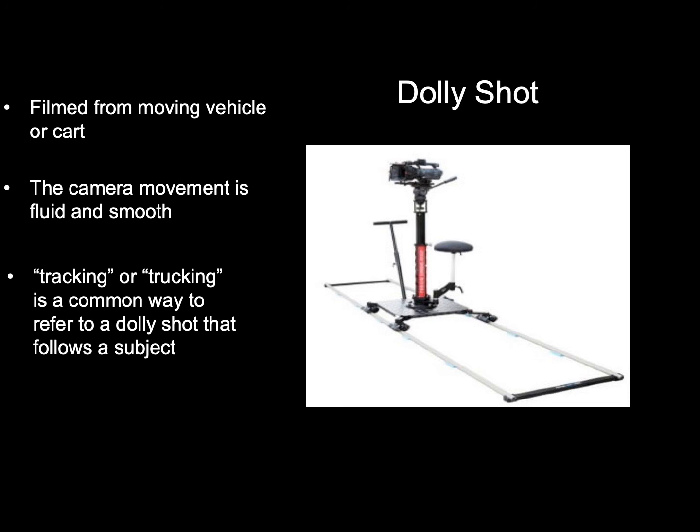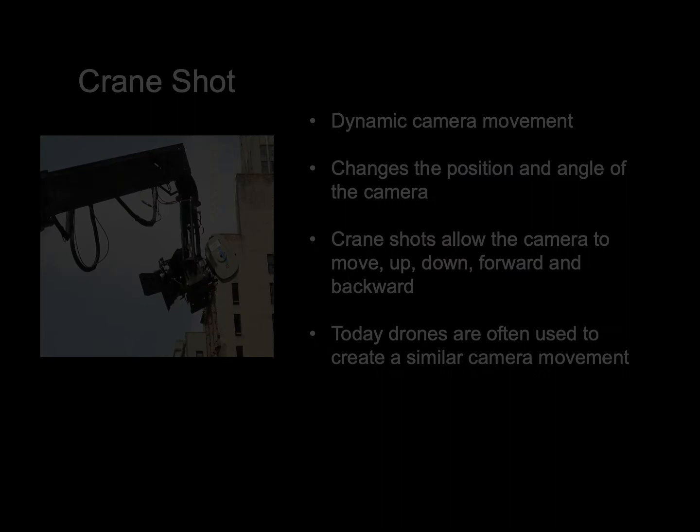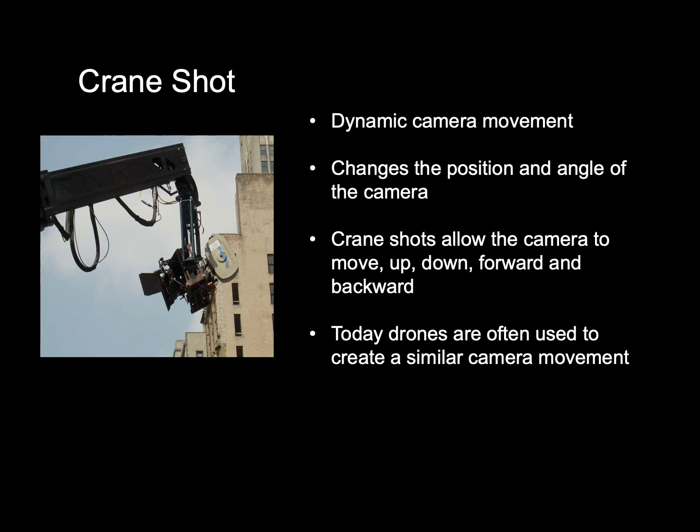Dolly shot: filmed from a moving vehicle or cart, the camera movement is fluid and smooth. Tracking or trucking is a common way to refer to a dolly shot that follows a subject. Crane shot: a dynamic camera movement that changes the position and angle of the camera, allowing it to move up, down, forward, and backward. Today, drones are often used to create a similar camera movement.